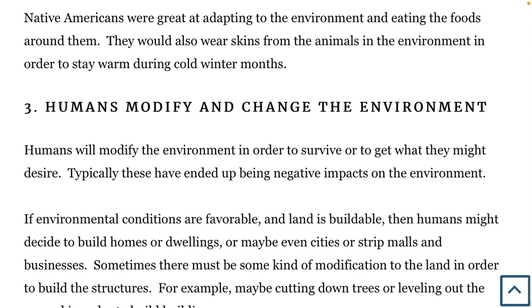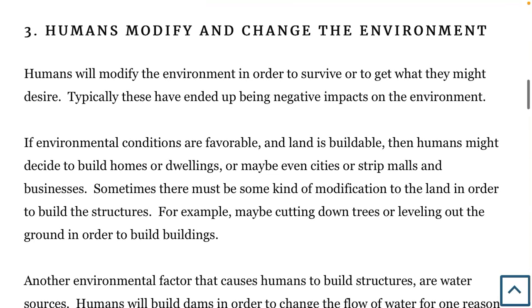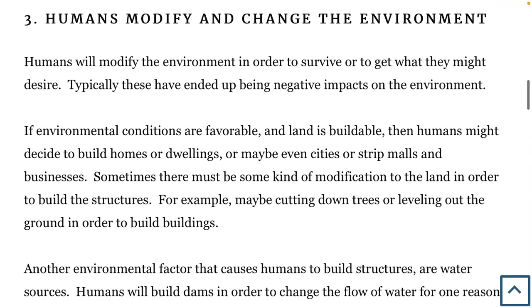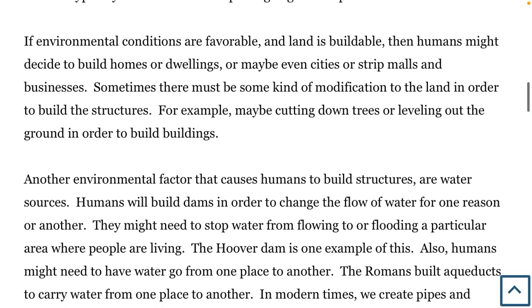Native Americans were great examples of adapting to the environment — eating foods around them and wearing animal skins to stay warm during cold winter months. The third way is humans modify and change the environment. Humans will modify the environment in order to survive or to get what they desire. Typically, these have ended up being negative impacts on the environment. If environmental conditions are favorable and land is buildable, humans might decide to build homes, dwellings, cities, strip malls, or businesses, sometimes requiring cutting down trees or leveling out the ground.